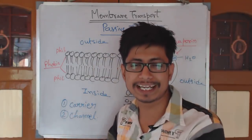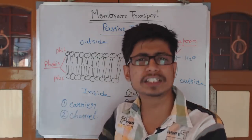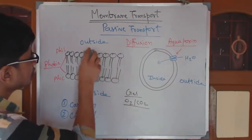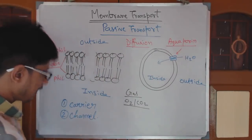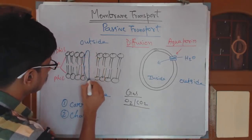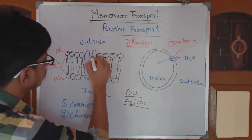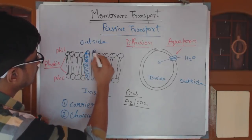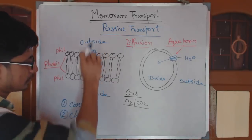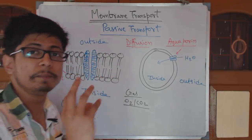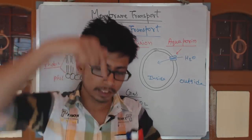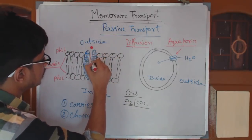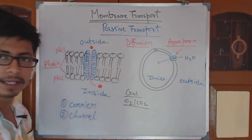Channel protein structure is very simple and easy. If I draw the channel protein in the membrane, it looks something like this — two different units of the protein. If you look at it from the top, it's a three-dimensional barrel-shaped protein, just a barrel with a pore inside. Because it's a cross-section view, I draw it this way. Molecules can easily pass through this channel. This is known as channel protein — it helps molecules pass down their concentration gradient.